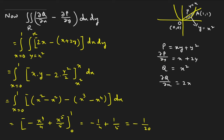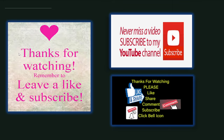Now you see our left hand side and right hand side are the same — both equal −1/20. Hence Green's theorem is verified. I hope it is very clear to all of you. We will do some more problems on Green's theorem in the next video, as adding more problems here would make this video too long. Thank you for watching, and if you understood, please share with your friends.